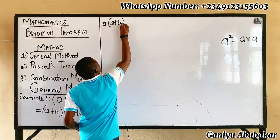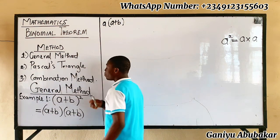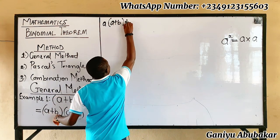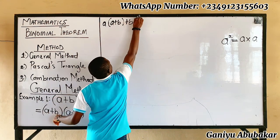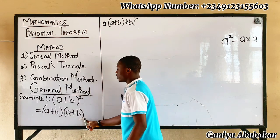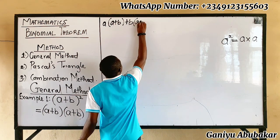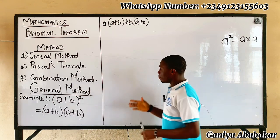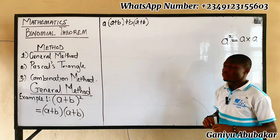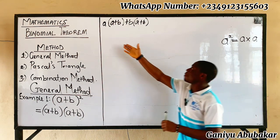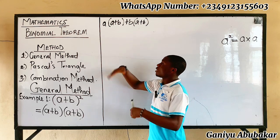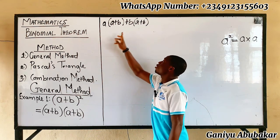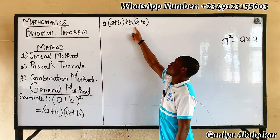Next, pick out the second term in the first bracket, which is plus b, and multiply by everything in the second bracket — that's a plus b. So the task is to use a to expand this bracket and use plus b to expand the other bracket.